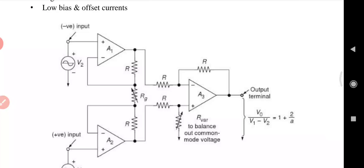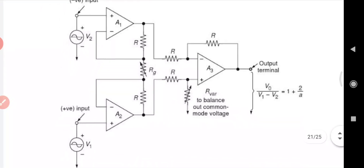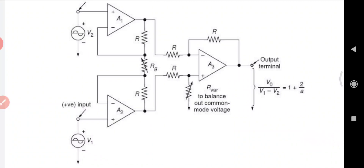Op-amp A3 with four equal resistors R forms a differential amplifier with a gain of one. The variable resistor R_variable is used to balance out any common mode voltage difference. R_g is used to set the gain using the formula: V0 / (V1 − V2) = 1 + 2R/Rg. V1 is applied to the positive input terminal and V2 to the negative input terminal. V0 is proportional to the difference between the two input voltages.